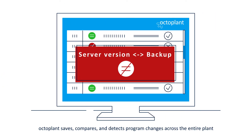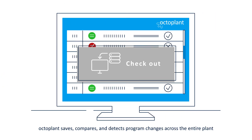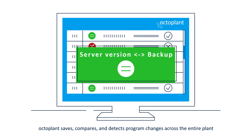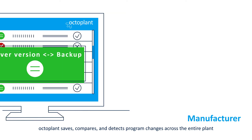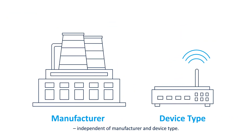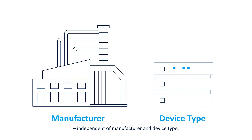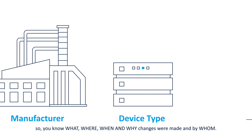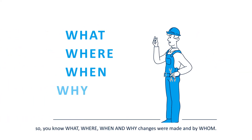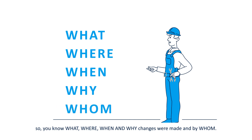OctoPlant saves, compares, and detects program changes across the entire plant, independent of manufacturer and device type. So you know what, where, when, and why changes were made and by whom.